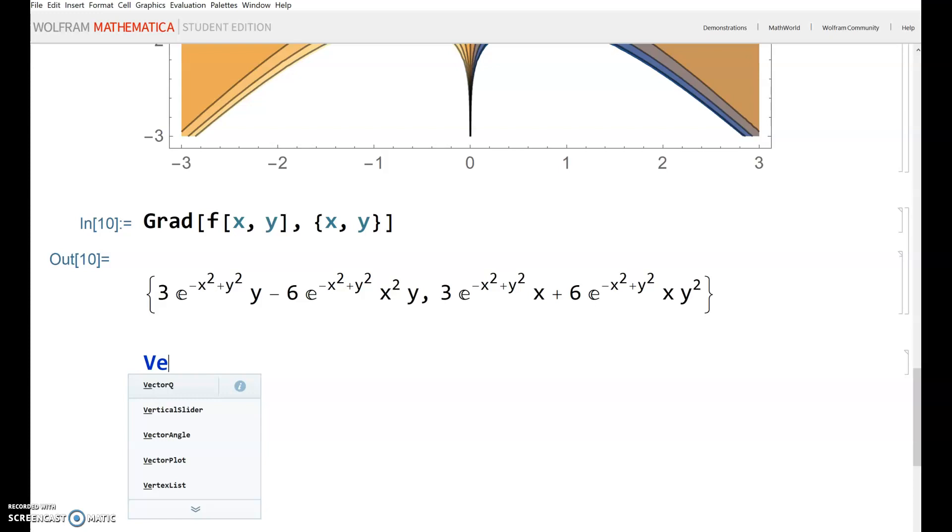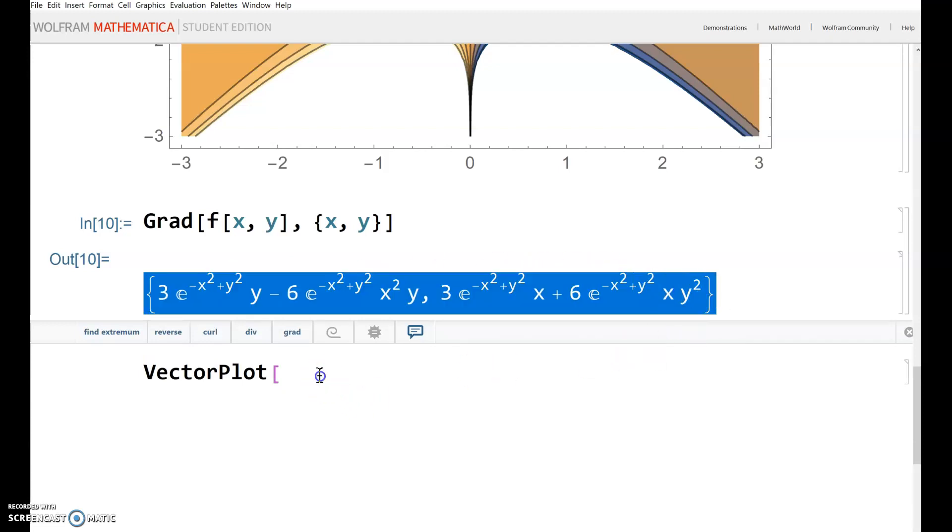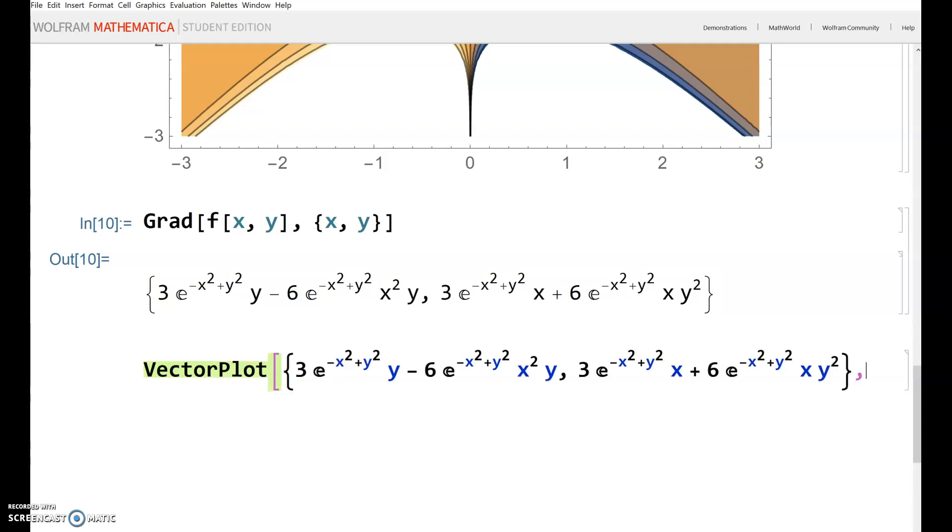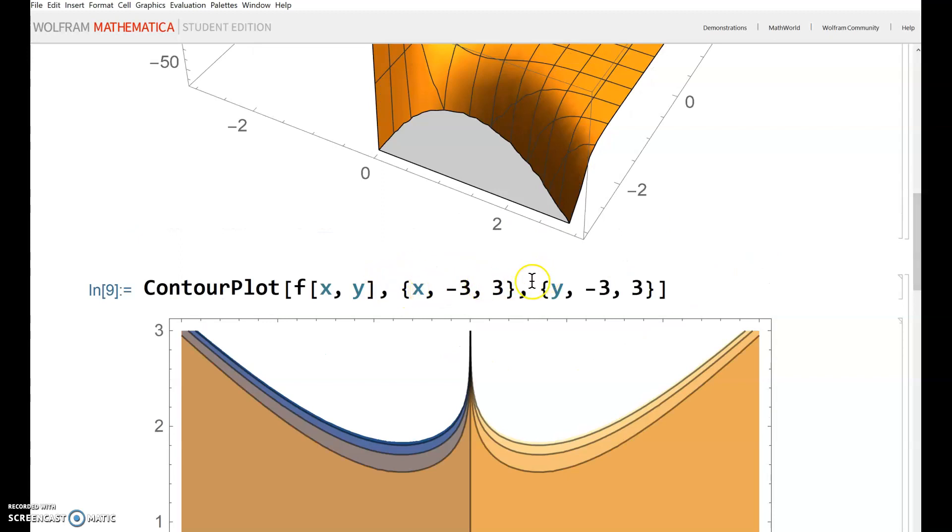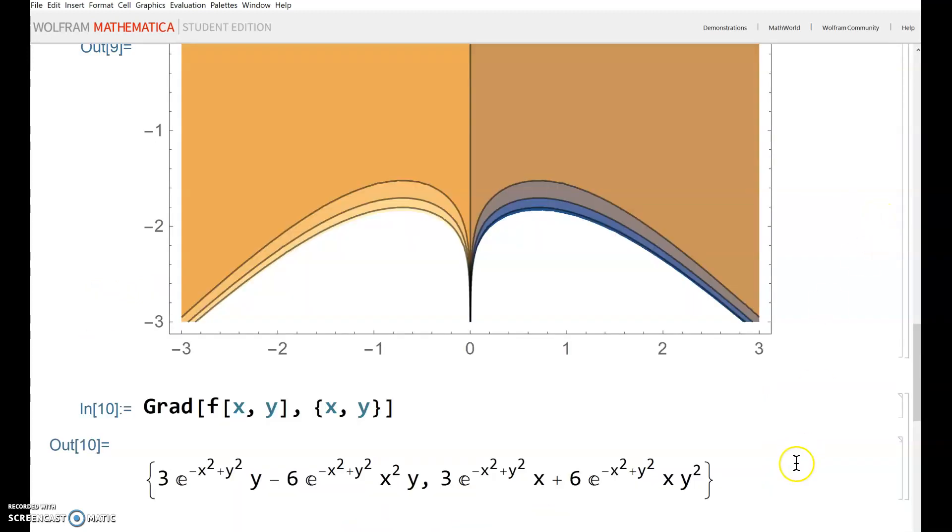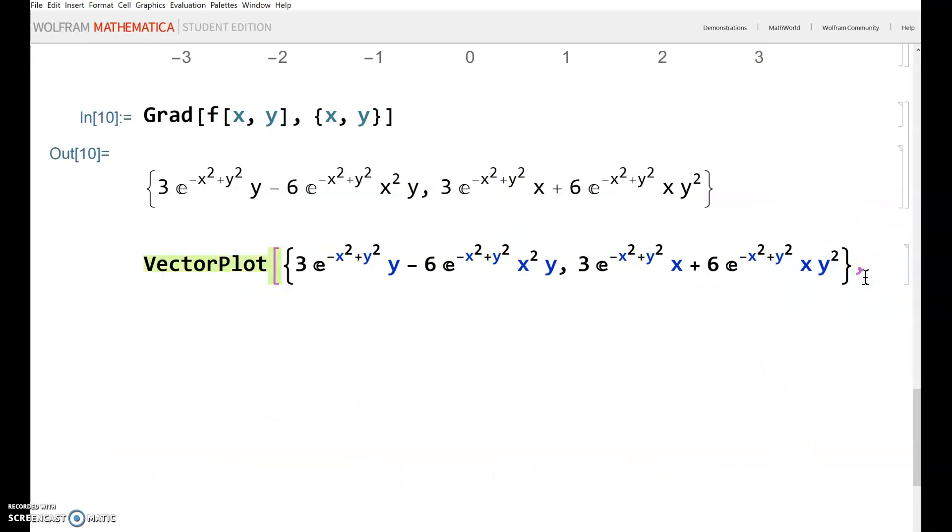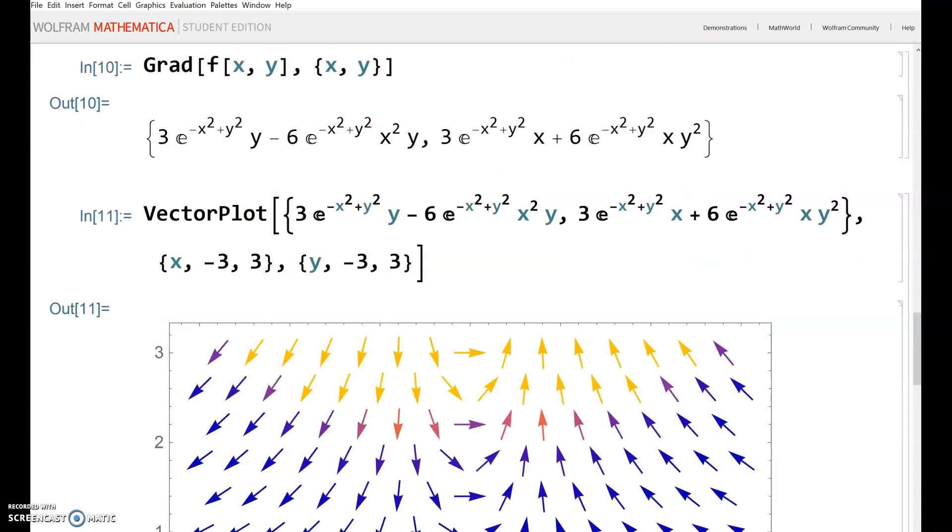For the vector field, we use the VectorPlot command. This gives you a graph where for every x,y coordinate, it draws a little arrow pointing in the appropriate direction. Just like with Plot3D and ContourPlot, you define the range for x and y. Let's set both from -3 to 3, and here's the result.